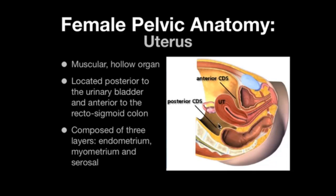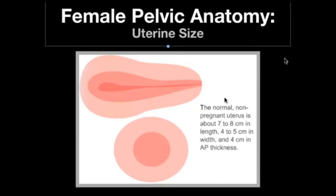The posterior cul-de-sac is the most dependent portion of the female pelvis and is where fluid will initially accumulate. Larger amounts may move along the back of the uterine fundus into the anterior cul-de-sac. In some patients, depending on positioning prior to the scan, you may only find fluid in the anterior cul-de-sac, so don't forget to look in this region when assessing for free fluid.